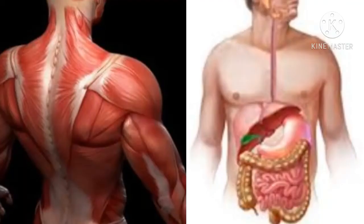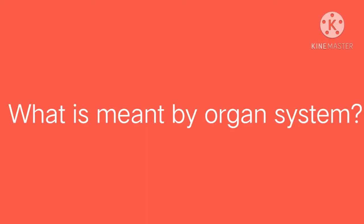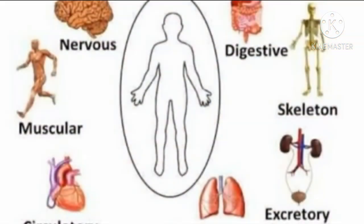Good morning students. Today we are going to start lesson number 12: the muscular system and digestive system in human beings. First, let's recall: what is made by an organ system? A group of our body organs working together to perform various functions is called an organ system. Examples: nervous system, digestive system, skeletal system.